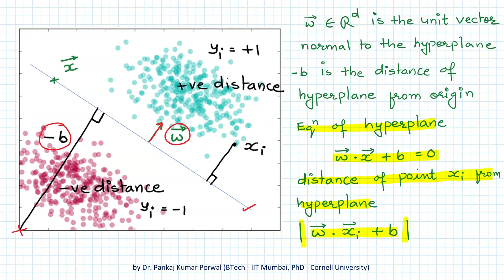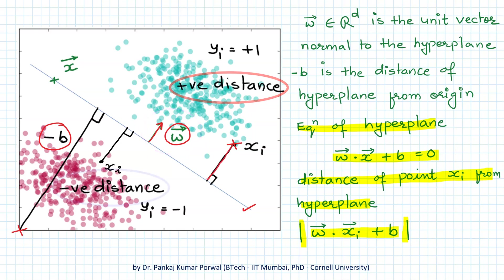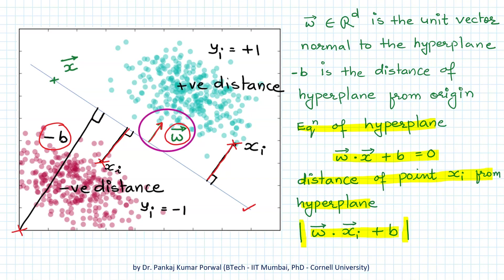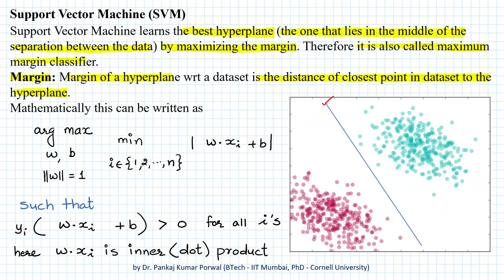Any point lying on the side toward which the unit normal points will have a positive distance to the hyperplane, while points on the opposite side will have a negative distance. When we say the hyperplane is at distance -b from the origin, the magnitude is b, and the minus sign indicates on which side of the hyperplane the origin lies relative to the unit normal direction. Because we always want distance to be positive, we use the absolute value sign.